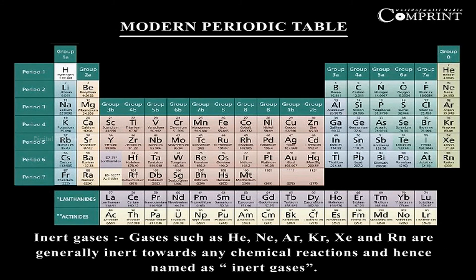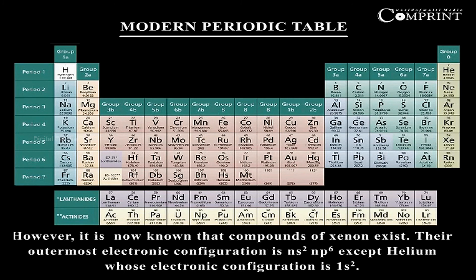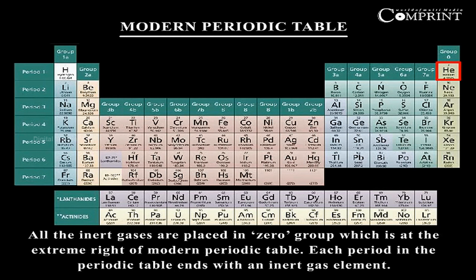Inert gases: gases such as He, Ne, Ar, Kr, Xe, and Rn are generally inert towards any chemical reactions and hence named as inert gases. However, it is now known that the compounds of xenon exist. The outermost electronic configuration is NS² and P⁶, except helium, whose electronic configuration is 1S². All the inert gases are placed in zero group, which is at the extreme right of the modern periodic table.